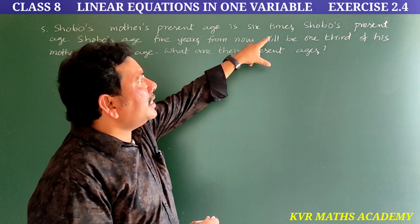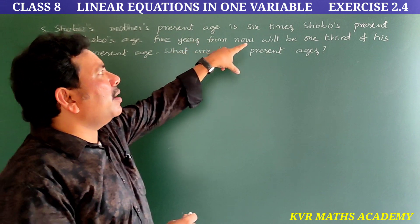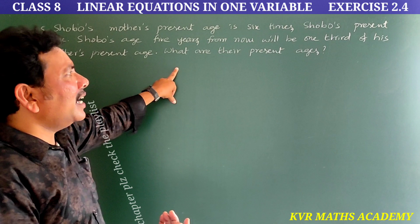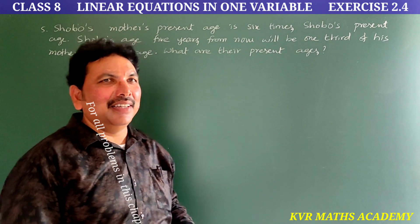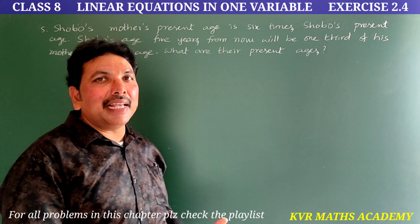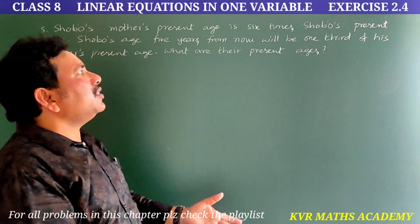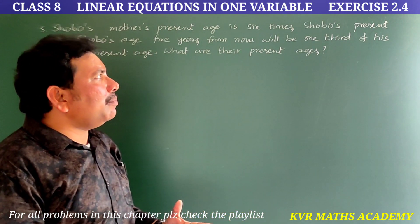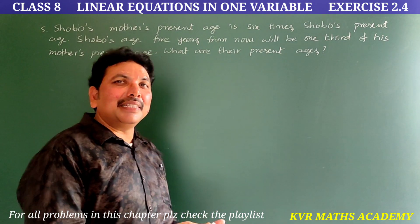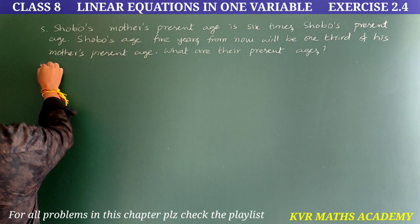This is the fifth question. Shobo's mother's present age is six times Shobo's present age. Shobo's age five years from now will be one third of his mother's present age. What are their present ages? So we need to find the present ages of Shobo and his mother.